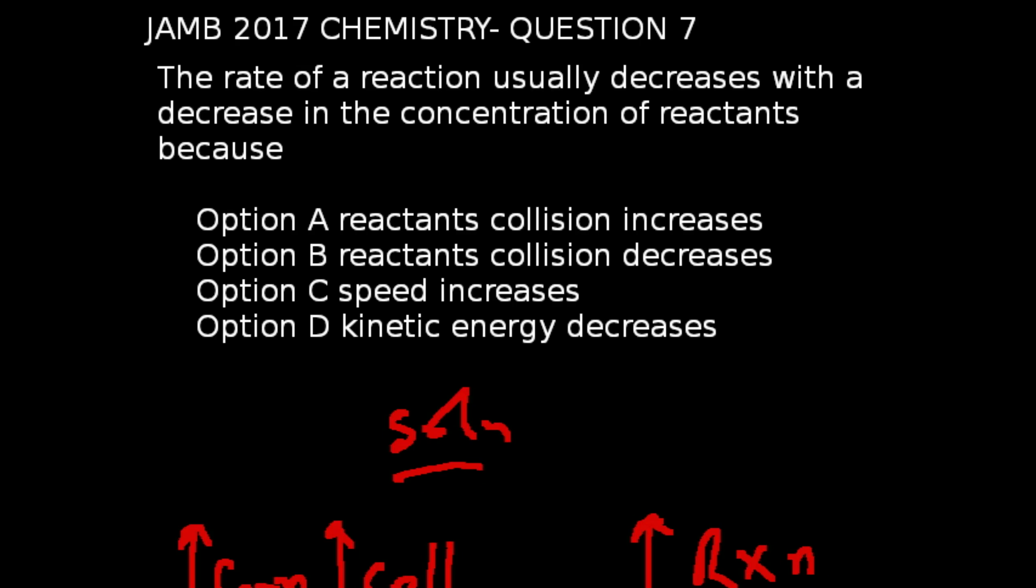Question number 7 of the JAMB 2017 chemistry exams is what we're looking at. The rate of reaction usually decreases with a decrease in the concentration of reactants because the correct answer to this question is obviously option B.